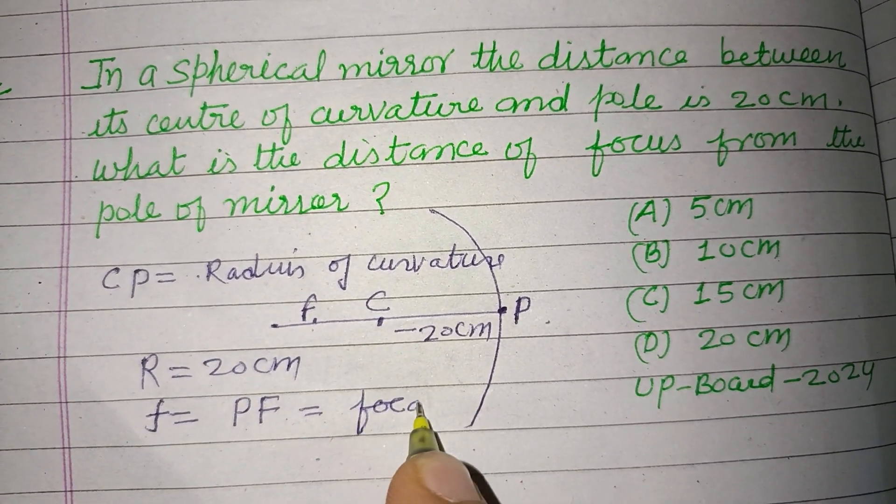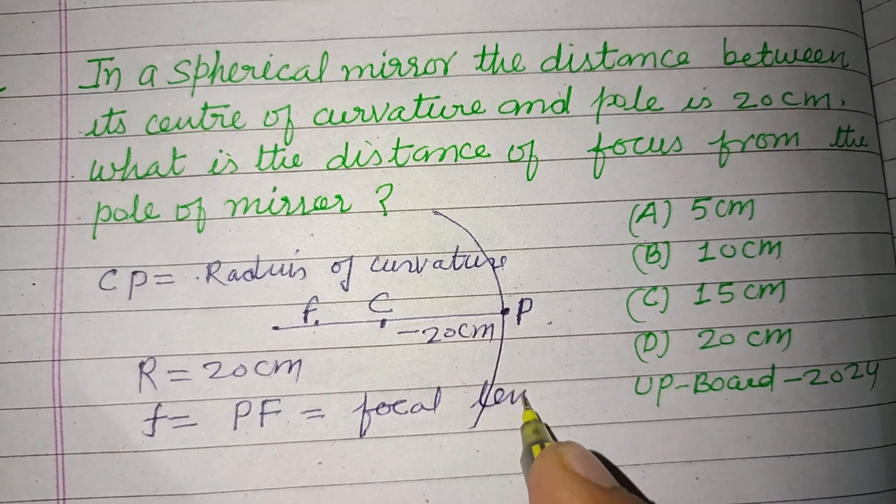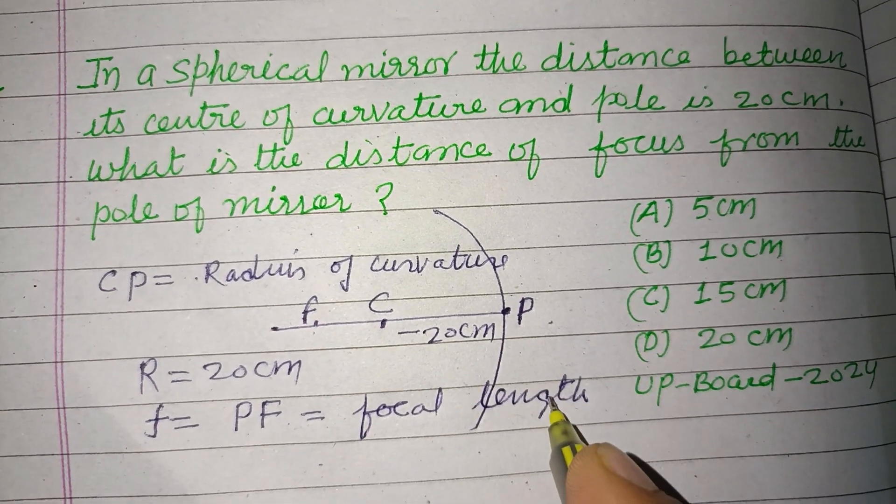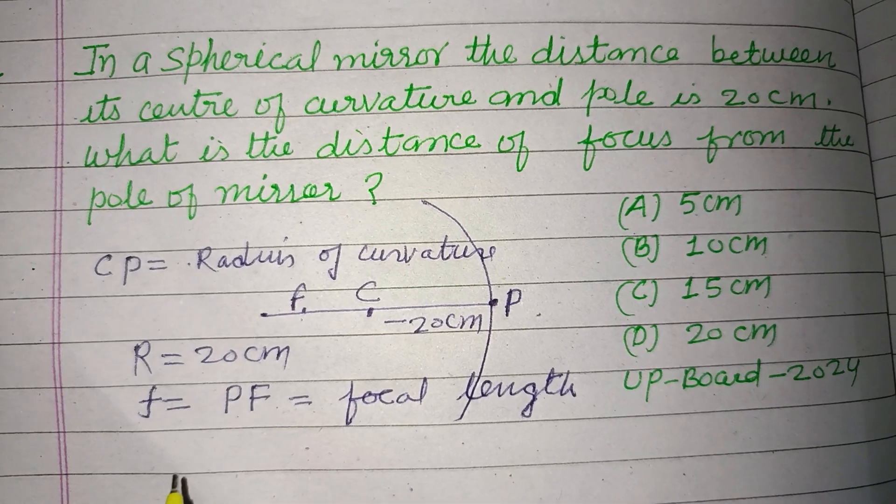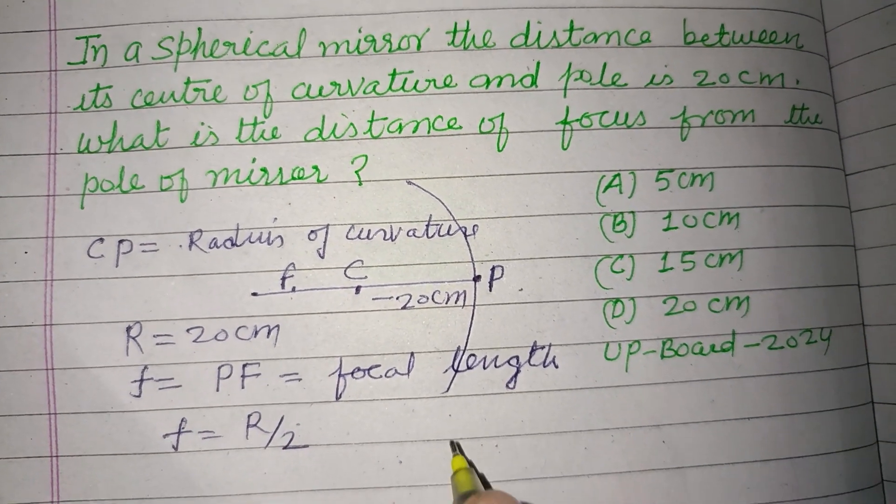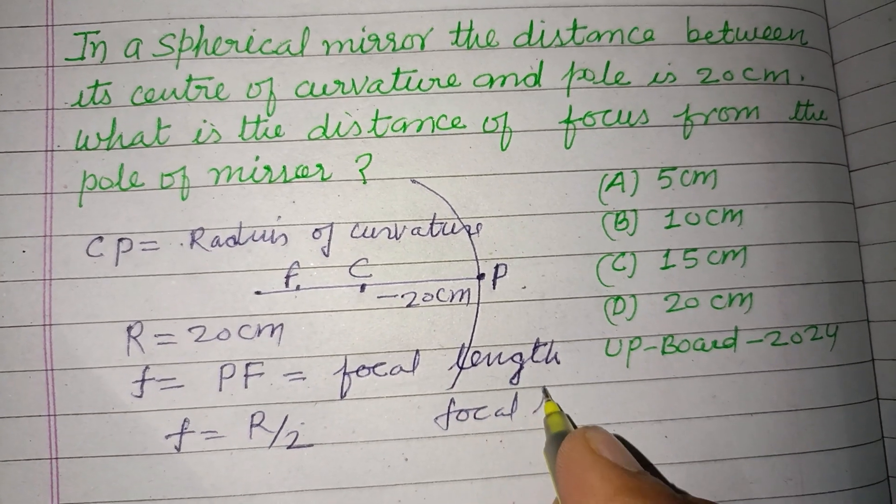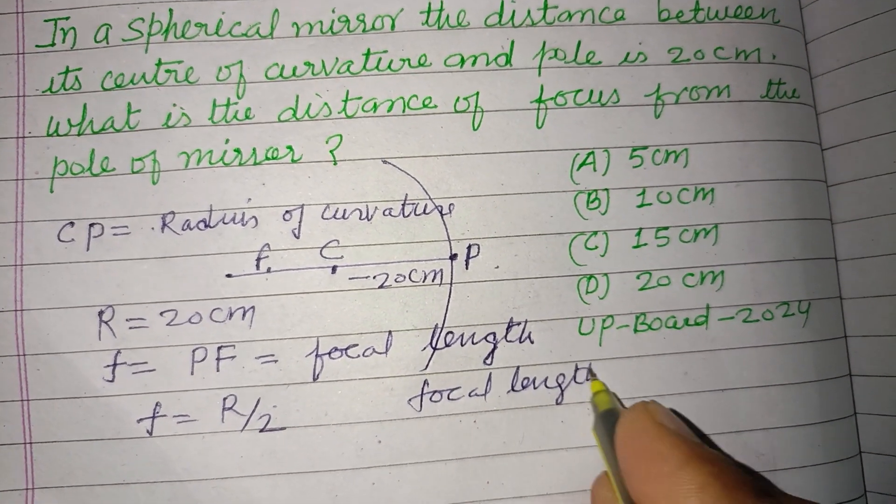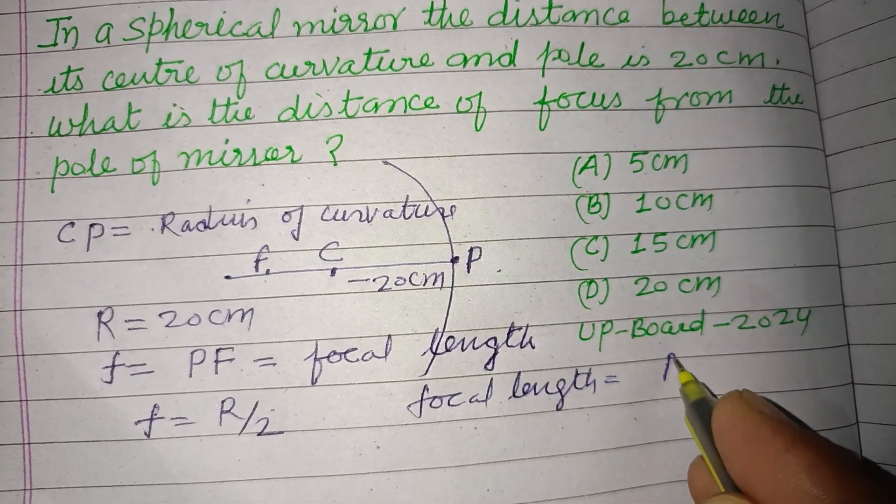So actually, focal length is being asked in this question. You know that F equals R by 2. Focal length equals radius of curvature divided by 2.